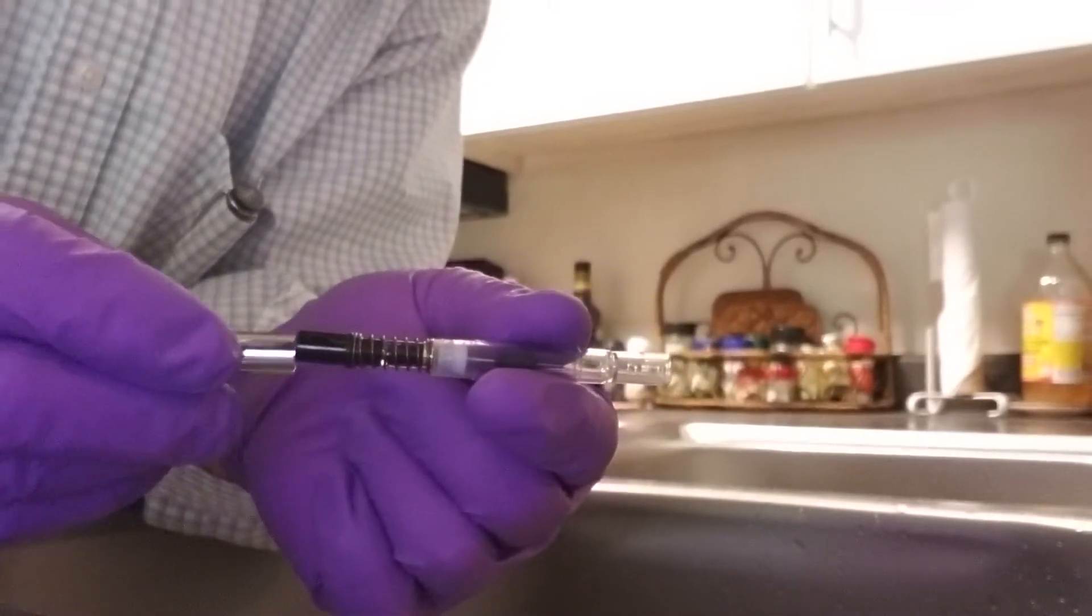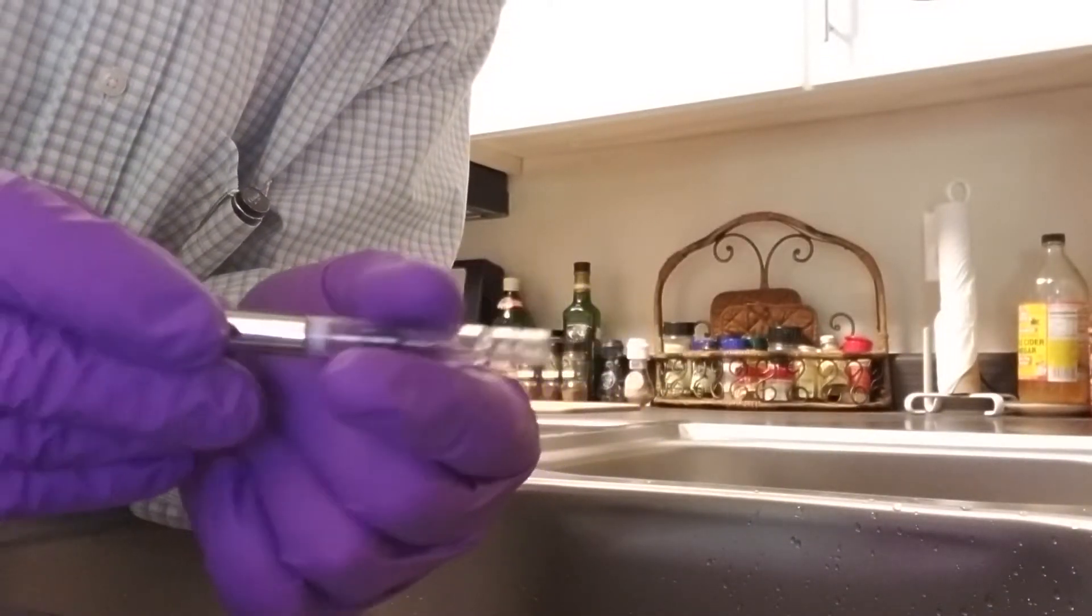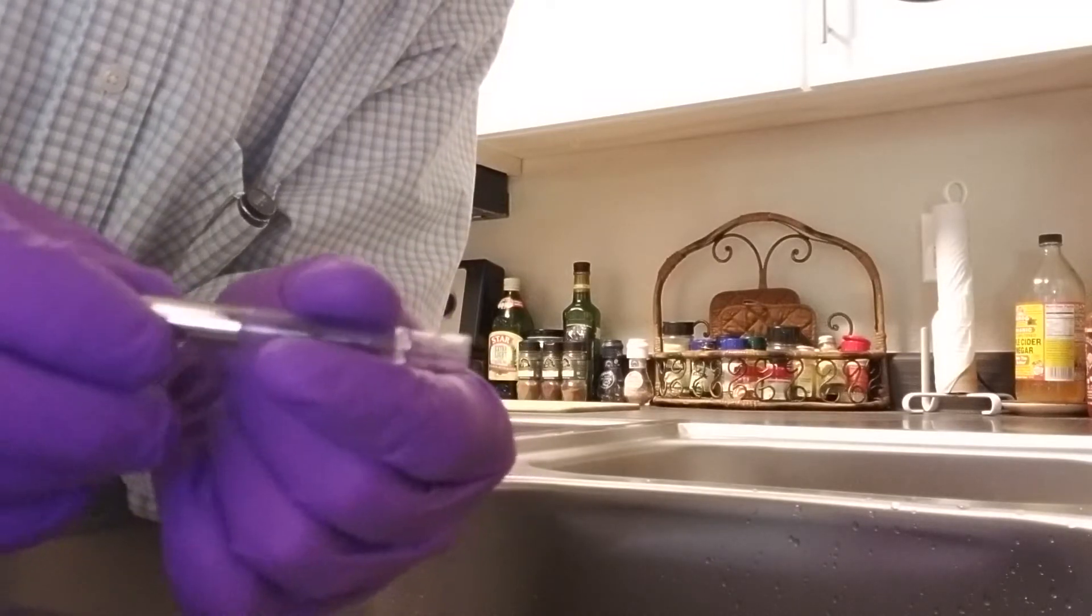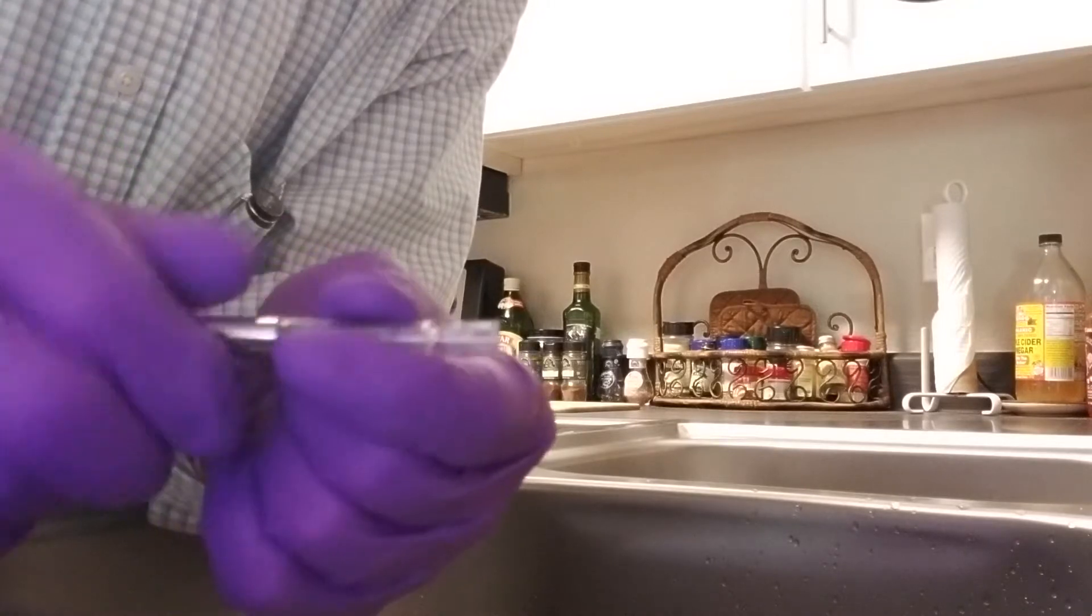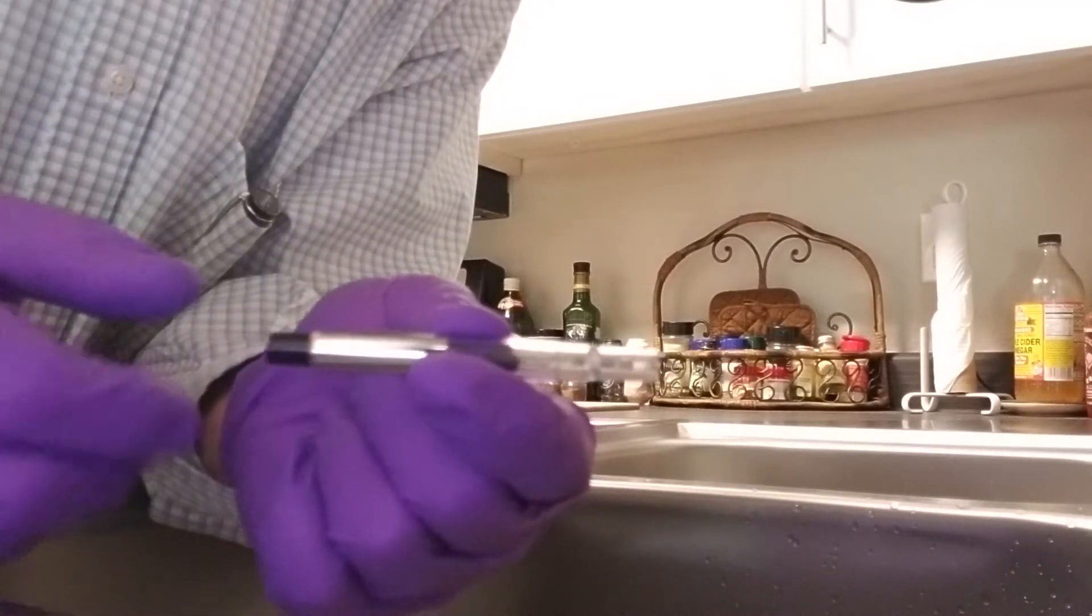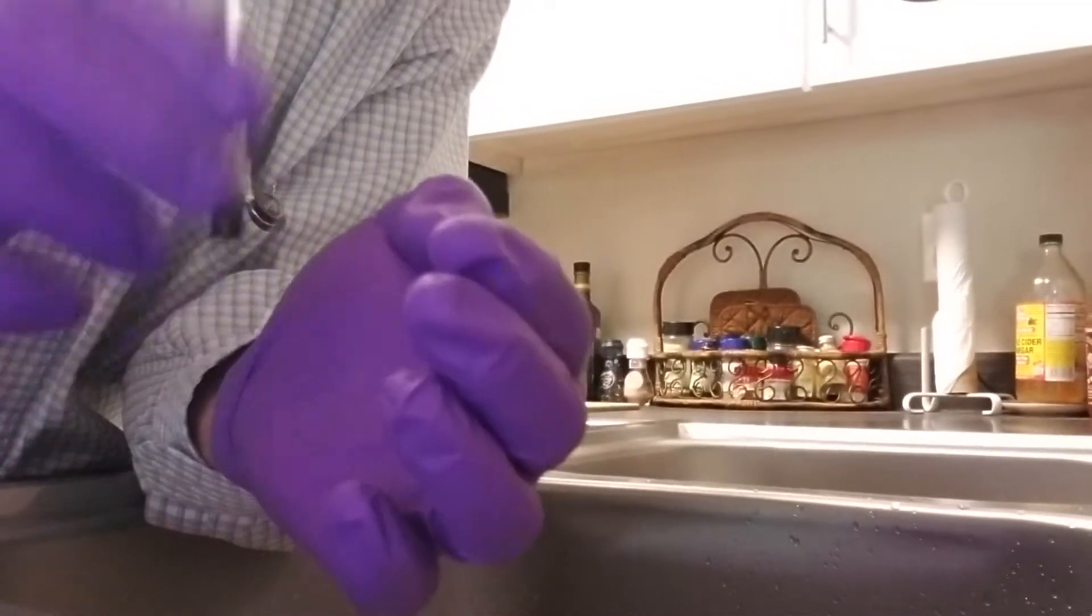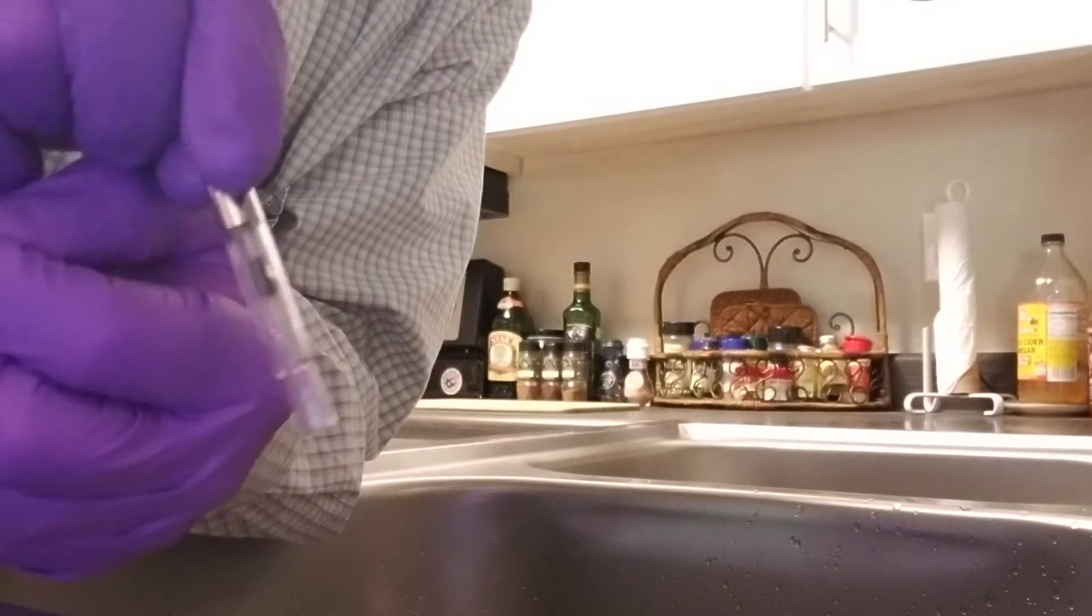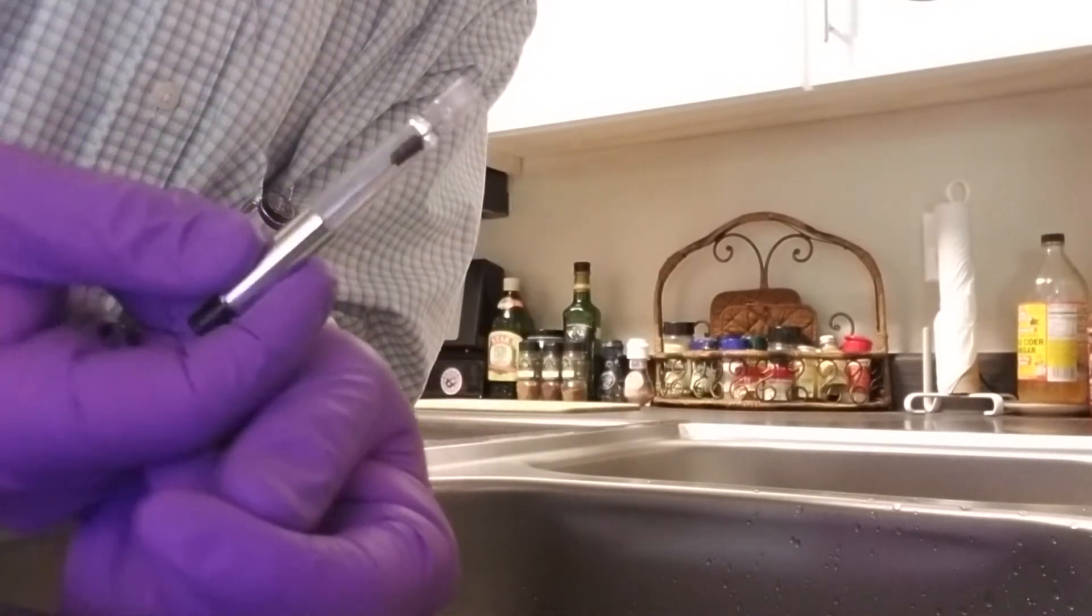Then you take your metal sleeve that you put on the counter, right side up so it's easy to grab and put right on. Push it all the way down to the threads and screw it back on. Done. Make sure that the plunger still moves freely. And it does.